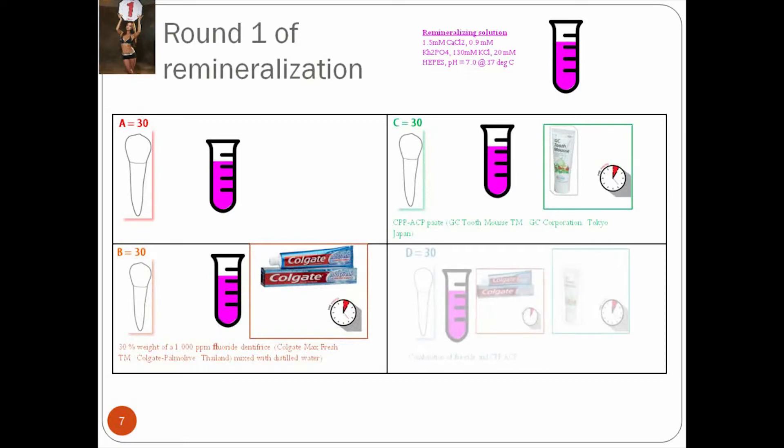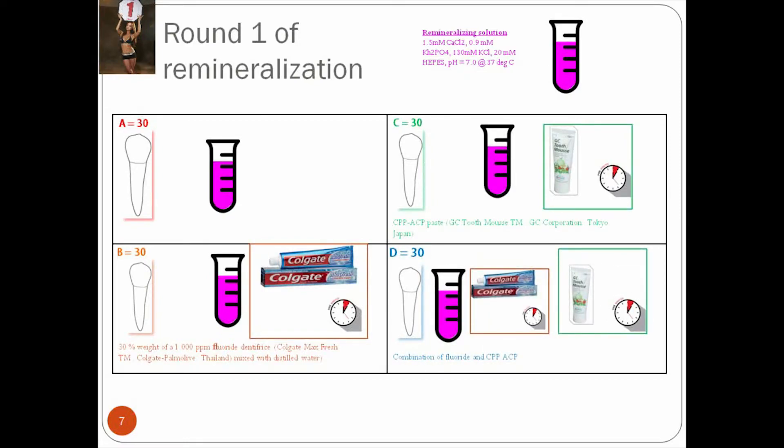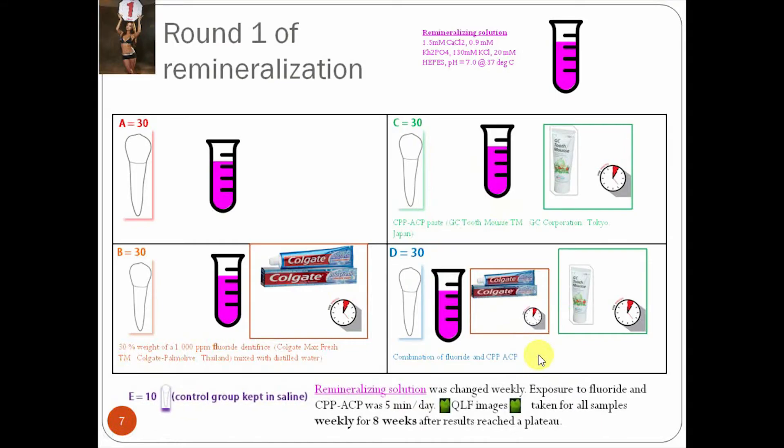Groups B, C, and D are different. Now, in groups B, C, and D, they get exposed to various. In group B, we see you're exposed to a fluoride slurry, which is Colgate Max Fresh, which has 1,000 ppm. The calcium group C is the GC tooth mousse. And group D has a combination. And it's important to note that they would change the remineralizing solutions weekly. They change it every week. And they would expose the teeth to the fluoride or to the combination or the GC mousse. They expose it every five minutes a day. And after about eight weeks, they reach the plateau with the results.